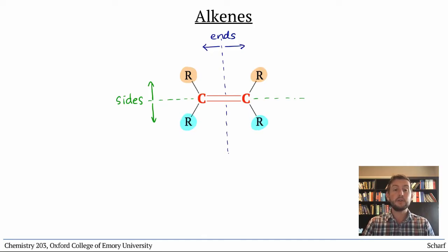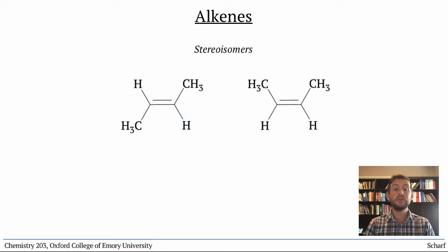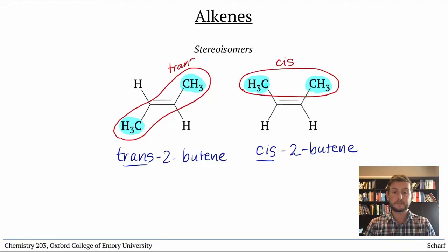Because of their restricted rotation, alkenes with the same connectivity — that is, the same groups attached to all the same carbons — can have two different orientations of those groups, or two different stereoisomers. For instance, 2-butene can have the two methyl groups on the same side of the alkene, or on opposite sides. We call the former cis-2-butene and the latter trans-2-butene, where cis and trans refer to the relationship between the two methyl groups.